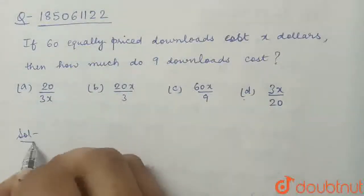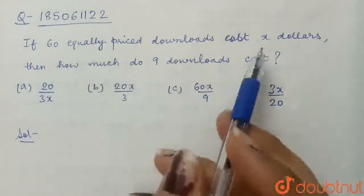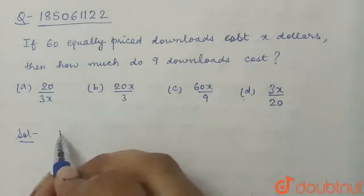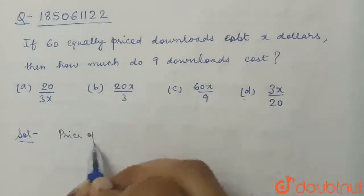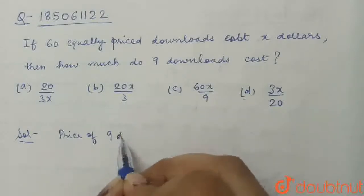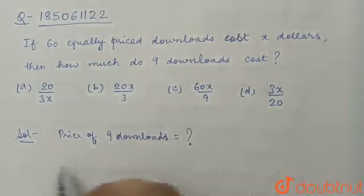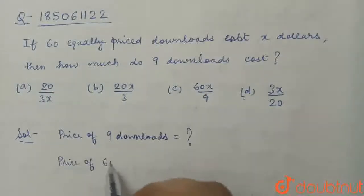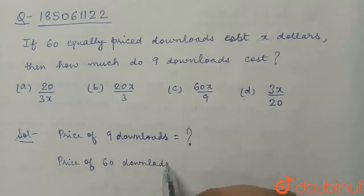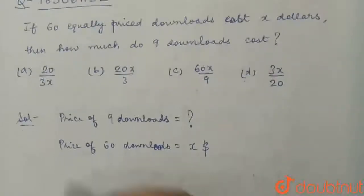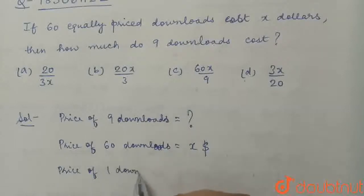So our solution will be: we are given the cost of 60 downloads which is equal to X dollars, and we are required to find out the cost of 9 downloads. By the unitary method, we know that the price of 1 download will be X upon 60 dollars.